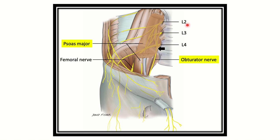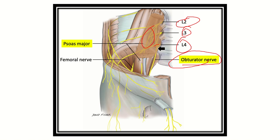The obturator nerve forms within the psoas major muscle, then runs through the pelvis going forward — not backward — and finally reaches the adductor compartment of the leg. Because it does not go posteriorly, the obturator nerve is not present at the level of the greater sciatic foramen.